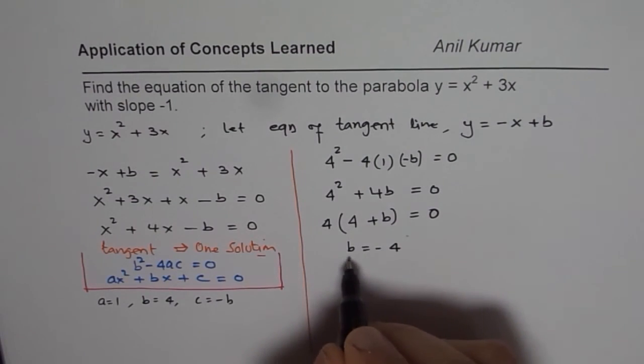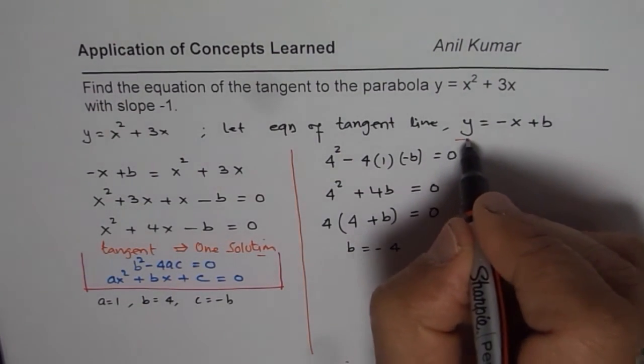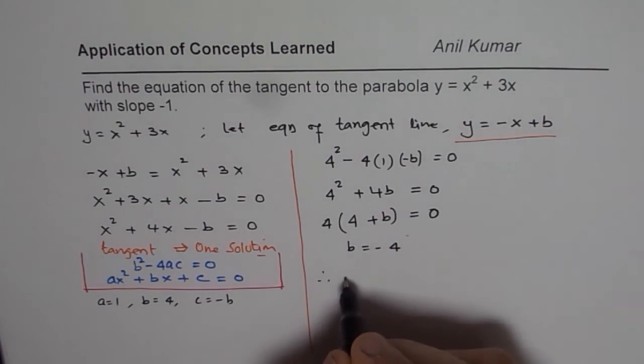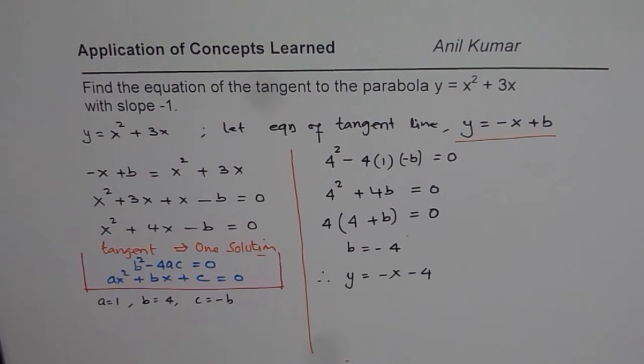So, that is the value of b. Once you know what b is, you can find the equation of the tangent line, right? So, therefore, the equation of tangent line is y equals to minus x minus 4. You get the idea, right?